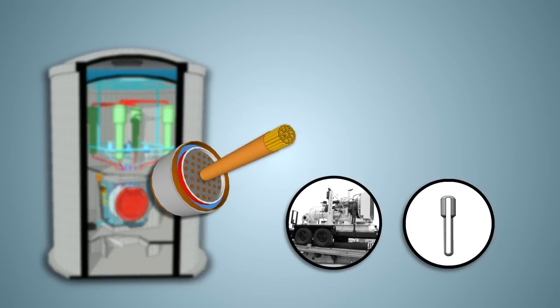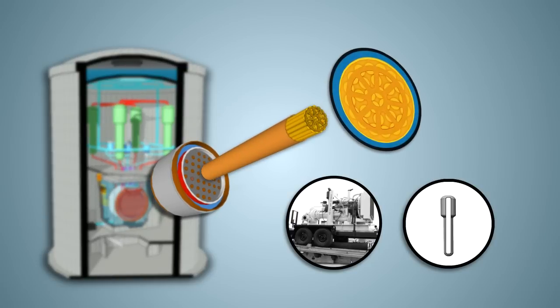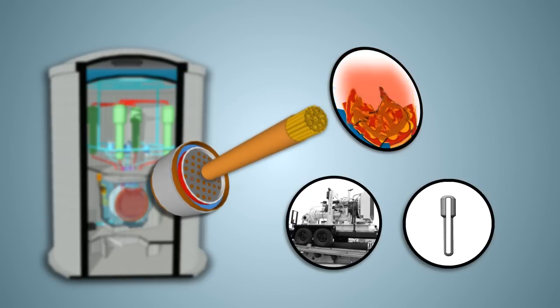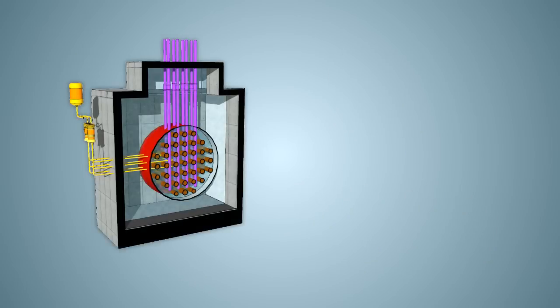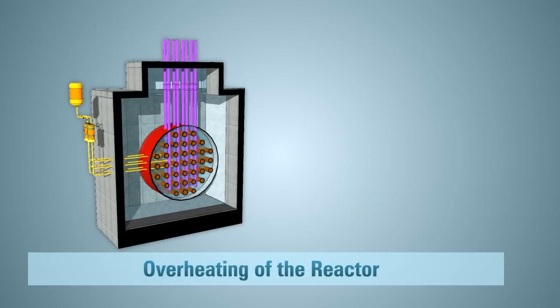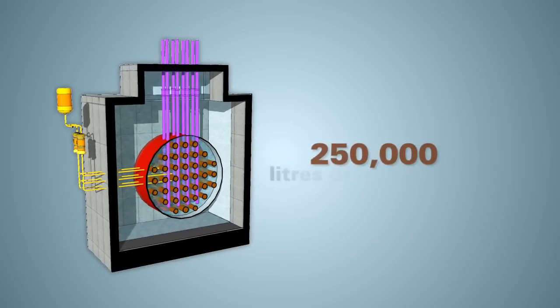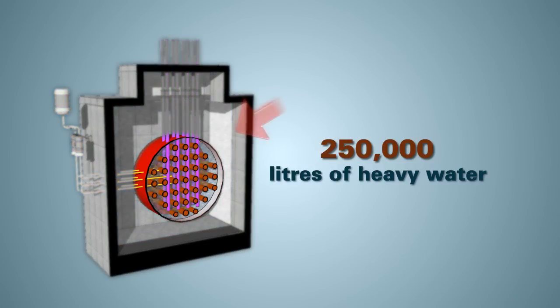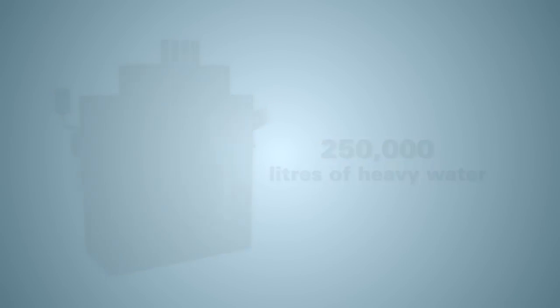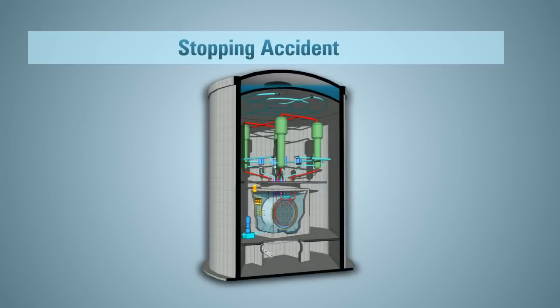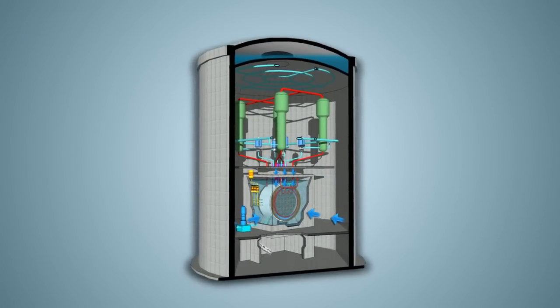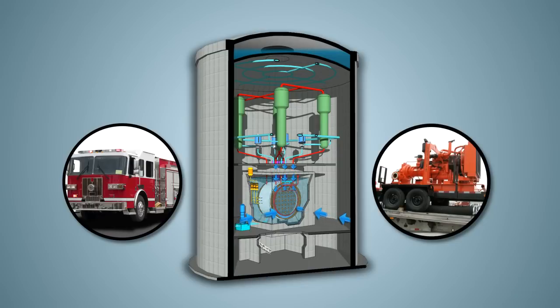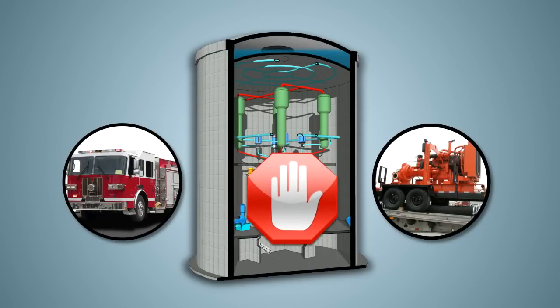Once the water in that system boils away, there is limited fuel damage. If nothing is done at this point, the 250,000 litres of heavy water inside the Calandria starts to heat up. The Calandria is what holds the fuel. Supplying water to the Calandria using emergency equipment such as fire trucks would stop the accident.